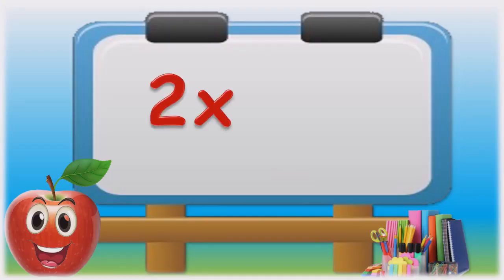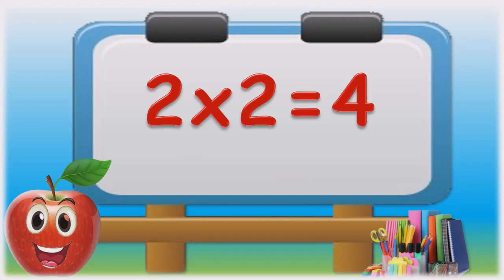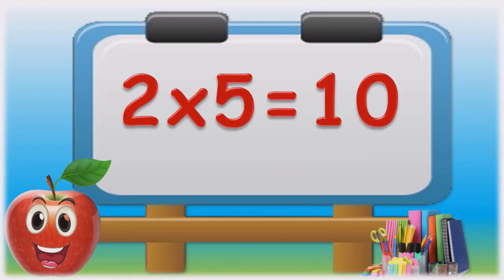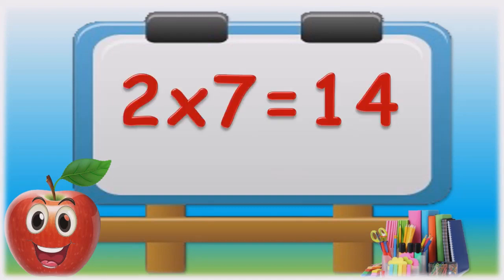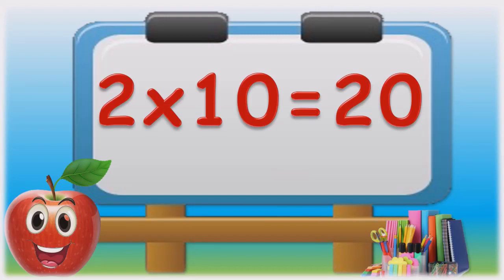Two ones are two. Two twos are four. Two threes are six. Two fours are eight. Two fives are ten. Two sixes are twelve. Two sevens are fourteen. Two eights are sixteen. Two nines are eighteen. Two tens are twenty.